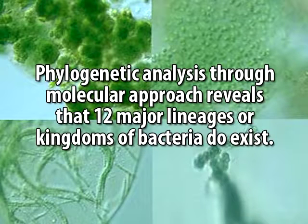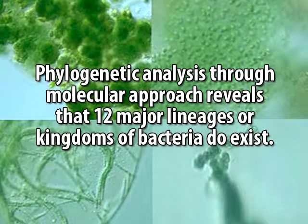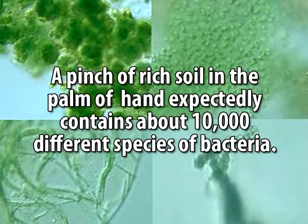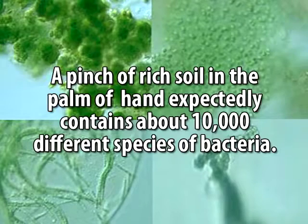Phylogenetic analyses through molecular approaches reveal that 12 major lineages or kingdoms of bacteria exist. This is a diverse world — if you take a pinch of soil in the palm of your hand, there are more than 10,000 different species of bacteria in it, and with all possible cultural combinations we will not be able to culture more than approximately 500 species of them.